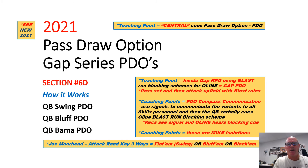Paul Hefty here with the Triangle Football System. I want to go over a pass-draw option — it's a gap series of PDOs. What we'll go through first is how it works, and then we'll explain these three ways to attack the read keys from Joe Moorhead, where we flat them, swing them, bluff them, and then block them.